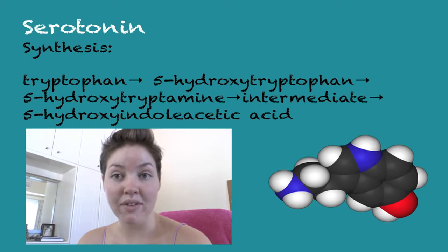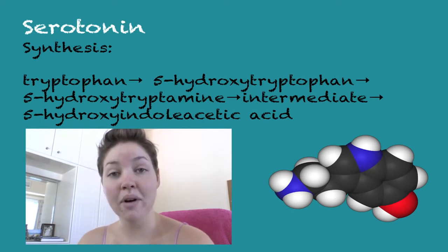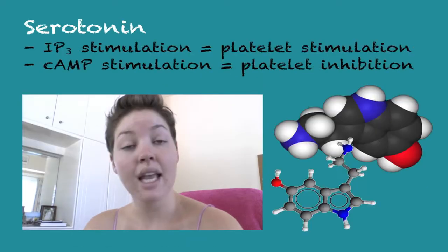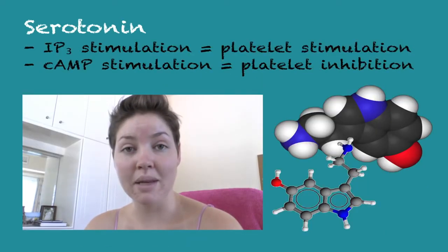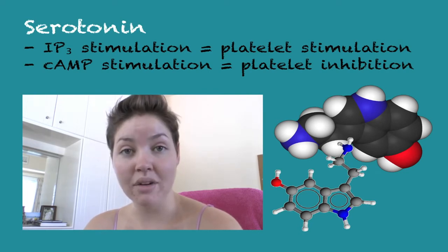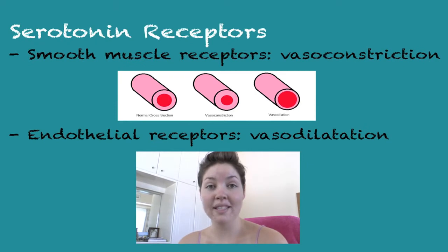Serotonin starts off as tryptophan. It is then hydroxylated to 5-hydroxytryptophan. It is then decarboxylated to 5-hydroxytryptamine. It is then broken down into an intermediate with MAO, and then aldehyde dehydrogenase forms 5-hydroxyindoleacetic acid. Inositol triphosphate is stimulated and causes platelet stimulation. Cyclic AMP stimulation causes platelet inhibition, so this regulates the release of serotonin from the platelets.